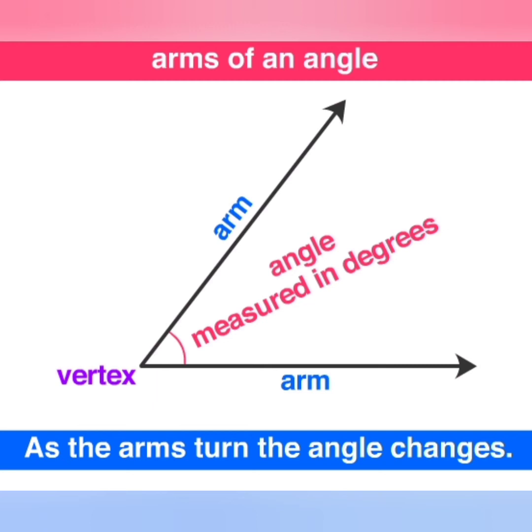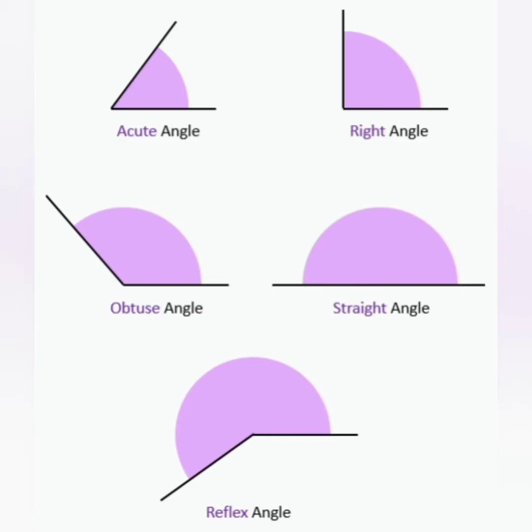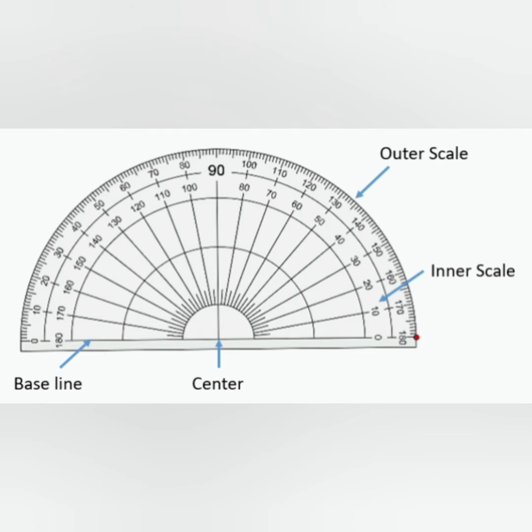As the arm turns, the angle also changes. These are some of the types of angles. As I told you, a protractor has two scales.